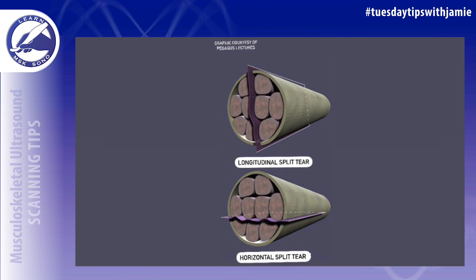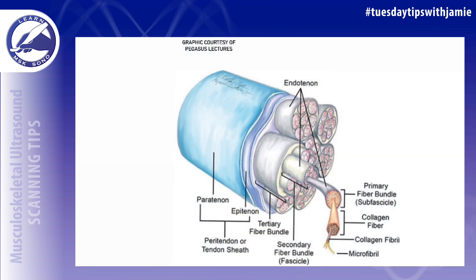A split tear is usually the first type of tear to occur within a tendon before the substance of the tendon is affected. It occurs within the extracellular matrix of a tendon, which is the space located between the tertiary fiber bundles that form a tendon. It is comprised primarily of collagen and functions to bind and organize the multiple tertiary bundles together.